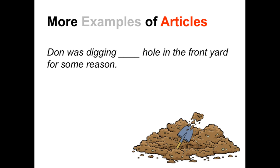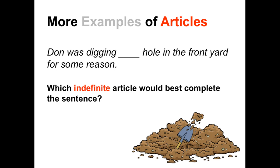Here's another example: 'Don was digging a hole in the front yard for some reason.' Which indefinite article would best complete this sentence? We would use the indefinite article 'a' because it comes before the word 'hole.' The word 'hole' begins with an H, but the H is pronounced — it is not silent. Therefore, it begins with a consonant sound, and we must use 'a' rather than 'an.'